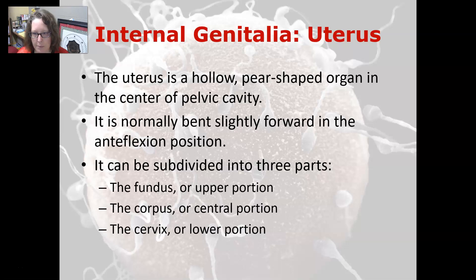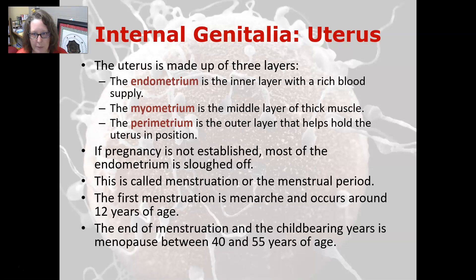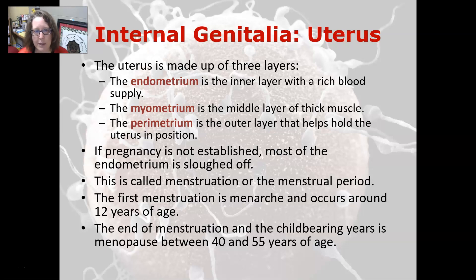The uterus is a hollow, pear-shaped organ in the center of the pelvic cavity. It is normally bent slightly forward in an anteflexion position. It can be subdivided into three parts: the fundus (the upper portion), the corpus (the central portion), and the cervix (the neck or lower portion of the uterus). The uterus is made up of three layers: the endometrium is the inner layer with a rich blood supply that thickens for implantation; the myometrium is the middle layer of thick muscle that contracts during labor; and the perimetrium is the outer layer that anchors the uterus in the pelvic cavity.